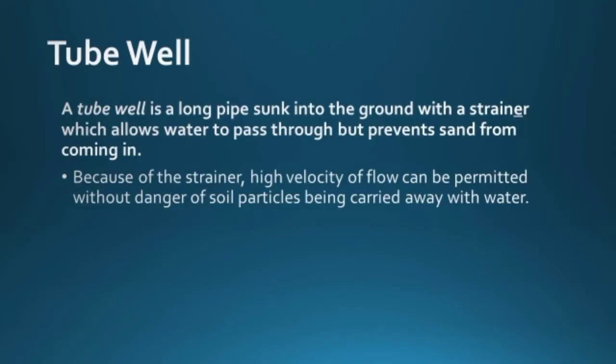A tube well is a long pipe sunk into the ground with a strainer which allows water to pass through but prevents sand from coming in. To escape the constraint of critical velocity, we insert a pipe into the soil or aquifer and pump out water, even well above critical velocity. Meshes or strainers are attached to the pipe to stop soil particles from entering, so whatever the velocity of water, there will be no soil particles in the pumped-out water. Because of the strainer, high velocity of flow can be permitted without danger of soil particles being carried away.